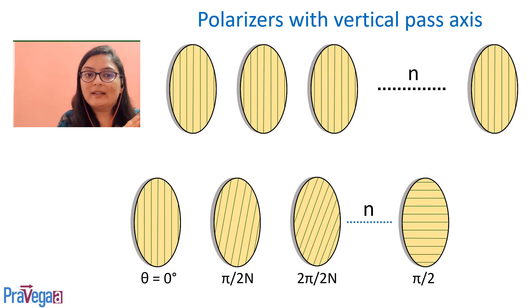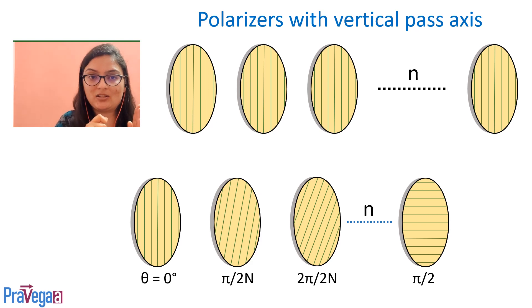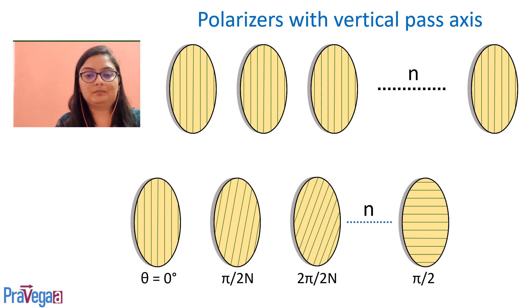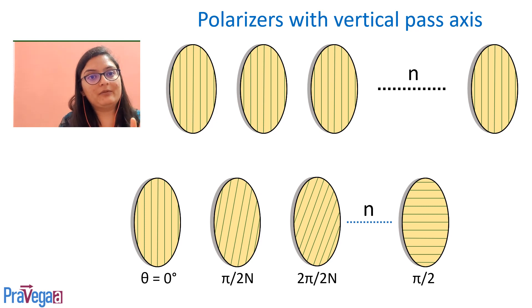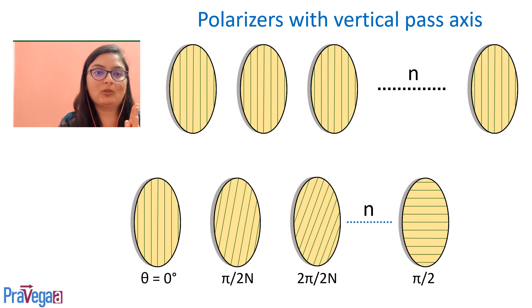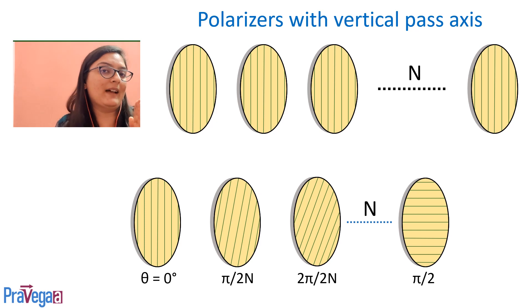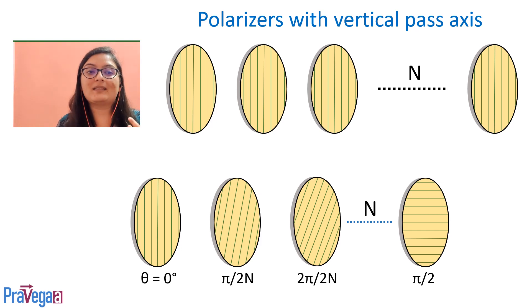Initially, all polarizers have vertical pass axes, but since each polarizer is rotated by mπ/2n, the angle between the first and last is π/2. So if the first polarizer has a vertical pass axis, the nth (last) polarizer will have a horizontal pass axis, because it is rotated by π/2.